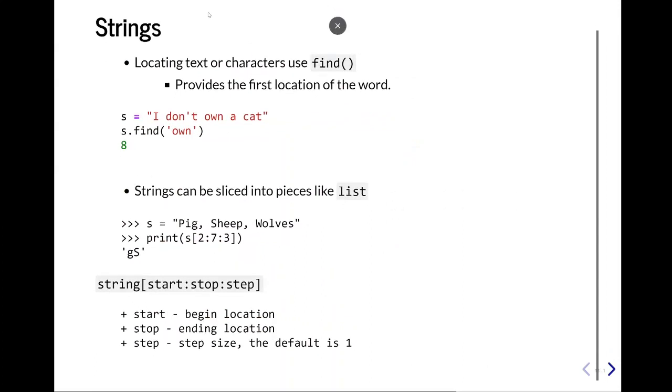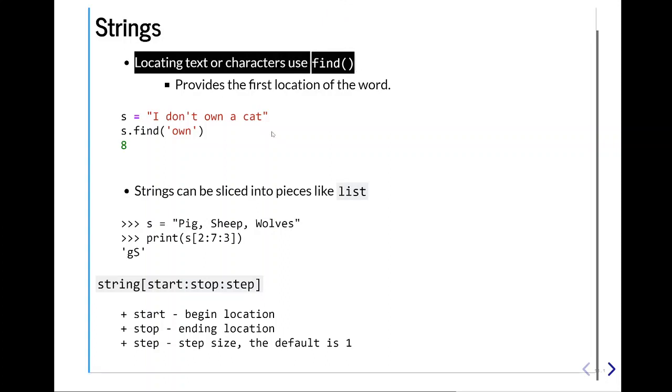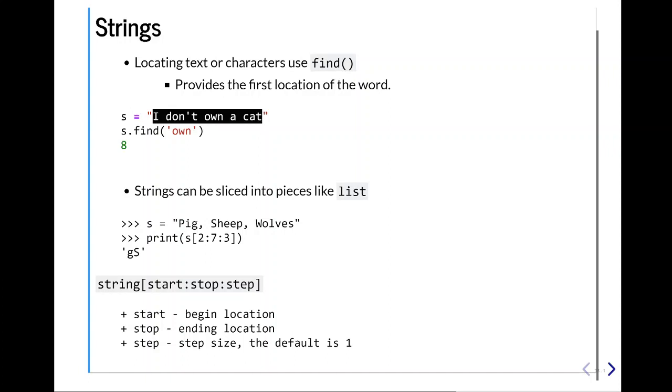Strings, we can find values as well by using the find, and what it does is it returns the first location in the word or letter. So, I don't own a cat is our string, and we're going to find own, and it's going to find the position where own exists in the first spot. So, here it is, 8, 0, 1, 2, 3, 4, 5, 6, 7, and then 8. It's right there.